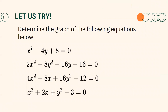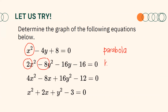Let's consider these examples and determine the conic section represented by each equation. For the first one, since there is only one term in second degree, which is x², this equation represents a parabola. For the second one, the numerical coefficients of x² and y² have different signs — positive 2 and negative 8 — so the equation represents a hyperbola.